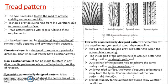The asymmetrical tyre has very good use. First, it has better grip compared to directional type tyres when the automobile is moving. The inside half pattern helps to achieve better grip during motion on a straight path, while the outside half pattern is used to achieve grip during motion on a curved path. This takes advantage of both symmetrical and non-symmetrical design, so it can withstand both straight path and curved path conditions.